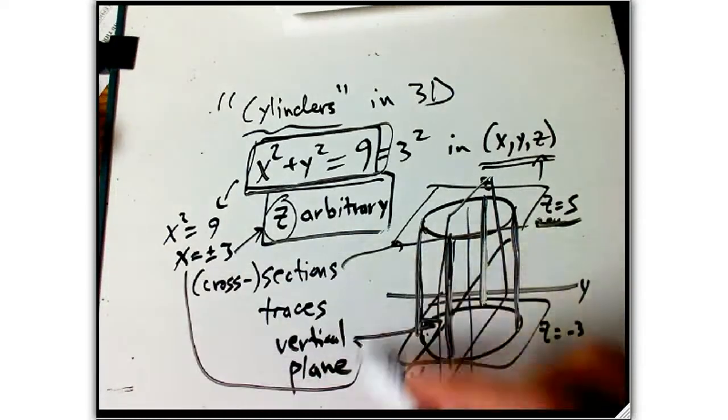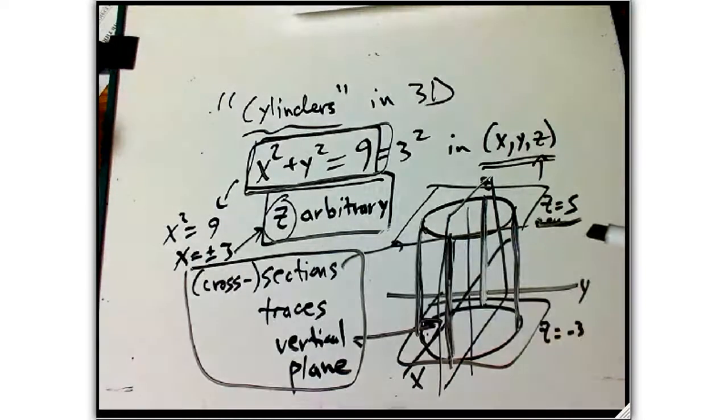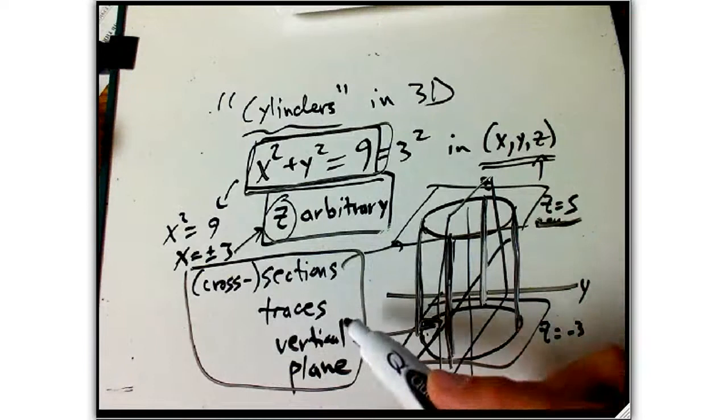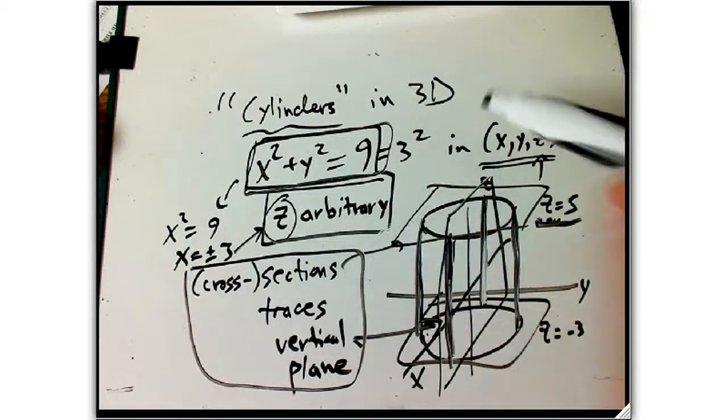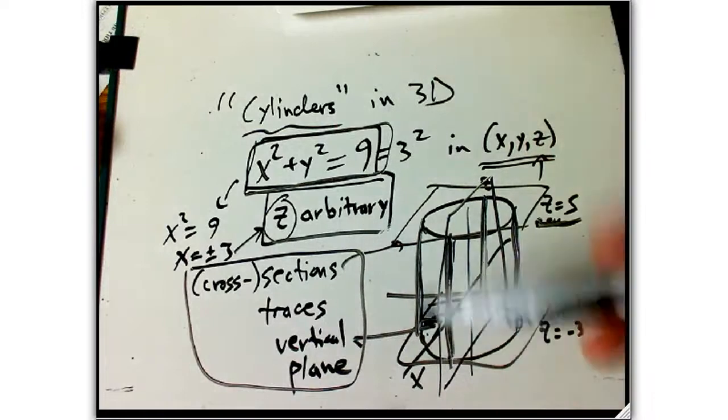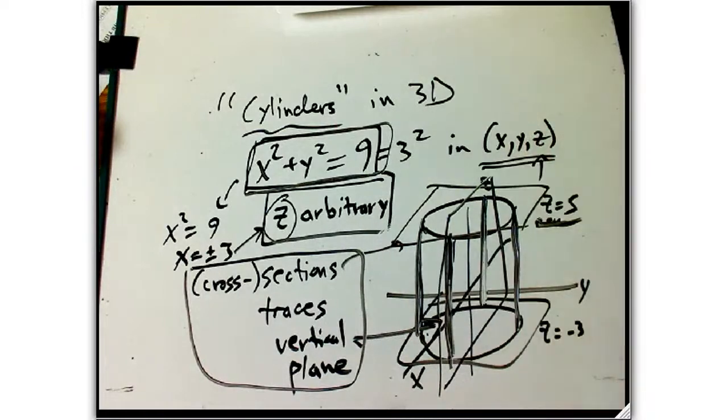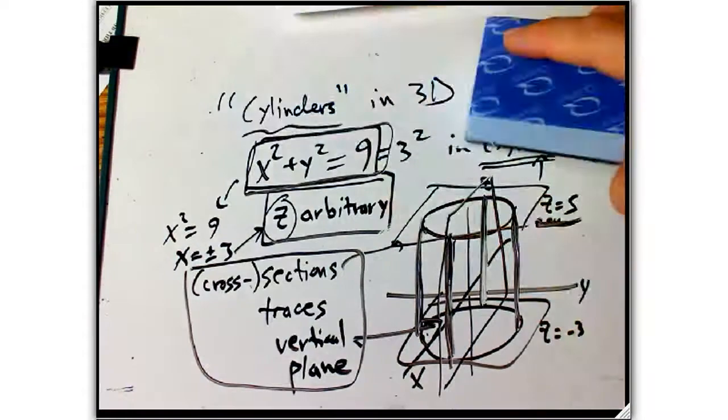So this is our huge, huge tool for drawing any kind of surface, is looking at the cross-sections. And very often, all we're going to do is we're going to draw some limited number of sections, horizontal, or vertical this way, or vertical this way, to get a sense of what the object is.